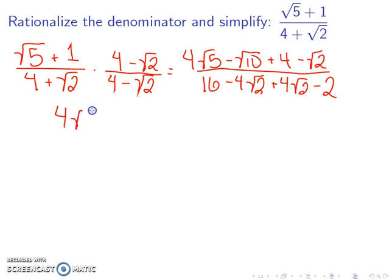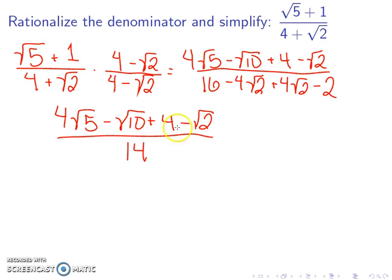So the top does not simplify at all. So we'll leave it the way it is. On the denominator, 16 minus 2 is 14. And then this is negative 4 square root of 2 plus 4 square root of 2, which gives me 0.